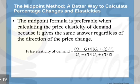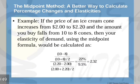The midpoint method is considered a better way to calculate percentage changes and elasticities. The midpoint formula is preferable when calculating price elasticity of demand because it gives the same answer regardless of the direction of the price change. Under this method, price elasticity of demand is the difference of the two quantities divided by their average, divided by the difference of the two prices divided by their average. Using the same ice cream example, the midpoint method gives an elasticity of 2.32.